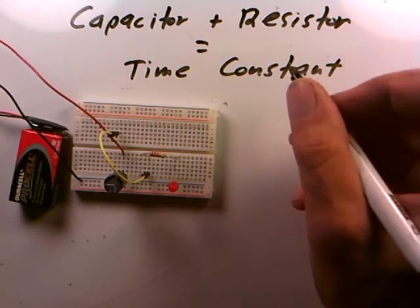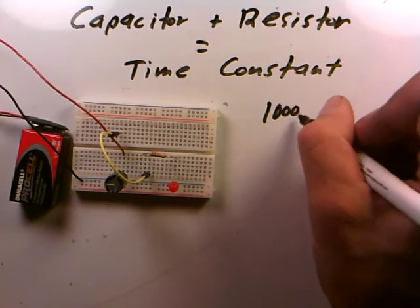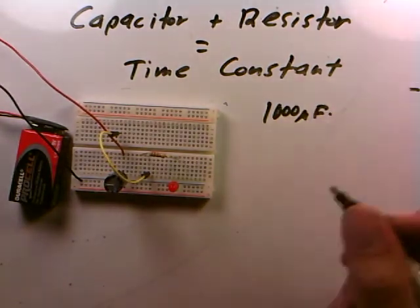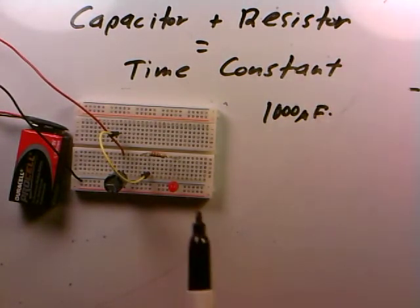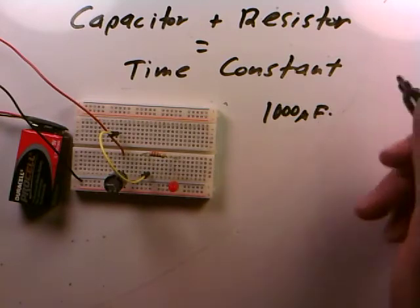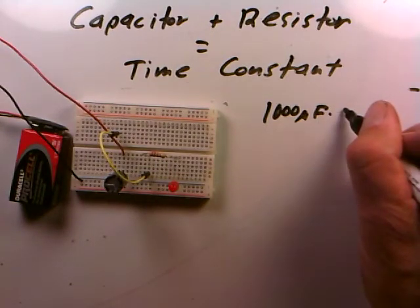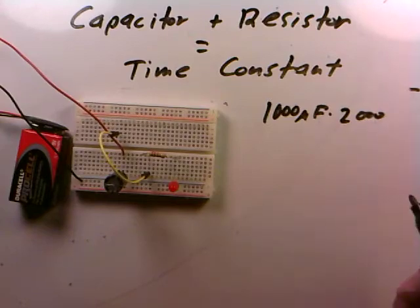So now we have a different time constant. We still have the 1000 microfarad capacitor but now we have a 2200 ohm resistor. I got my red red red. I'm gonna make it a bit easy on myself. I'm gonna say it's 2000. I'll ignore the 200 because I want to do a little math in my head.